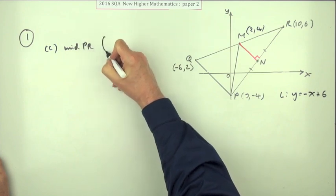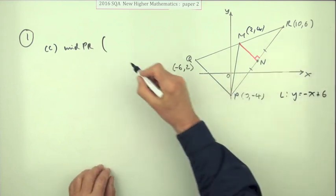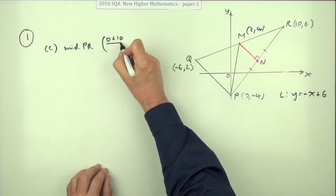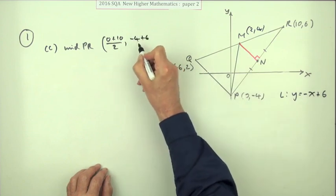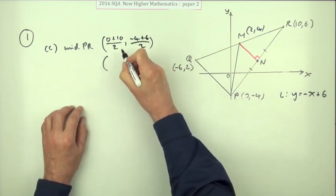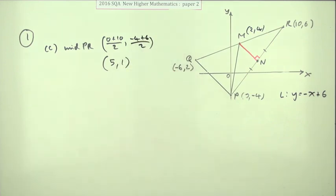So what is the midpoint of PR? The midpoint of PR will again be the average of the coordinates. 0 plus 10, although obviously the halfway is 5, and negative 4 plus 6. So that would be 5, and that's just 2, so that's 5, 1. I'm going to give it a name. N is 5, 1.